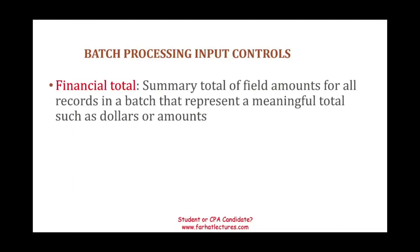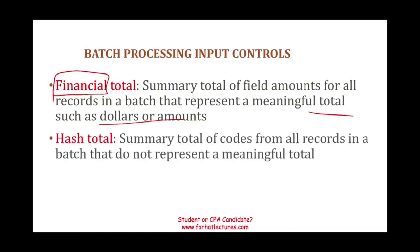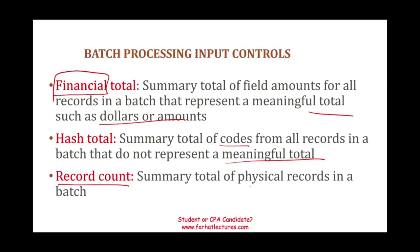Let's start with the three input controls. First, financial total: it's a summary of all amount fields for all records in a batch that represent a meaningful dollar amount. When you add up all the dollar amounts, it represents the total — so it makes sense because you are adding up dollars and cents. Second, hash total: you add up all the numbers of something, but those numbers don't represent any meaningful total on their own. It's a summary total of codes from all records in a batch that don't represent a meaningful total. Third, the record count: a summary of all total physical records in a batch — simply how many units or transactions were generated, how many customers, how many transactions.